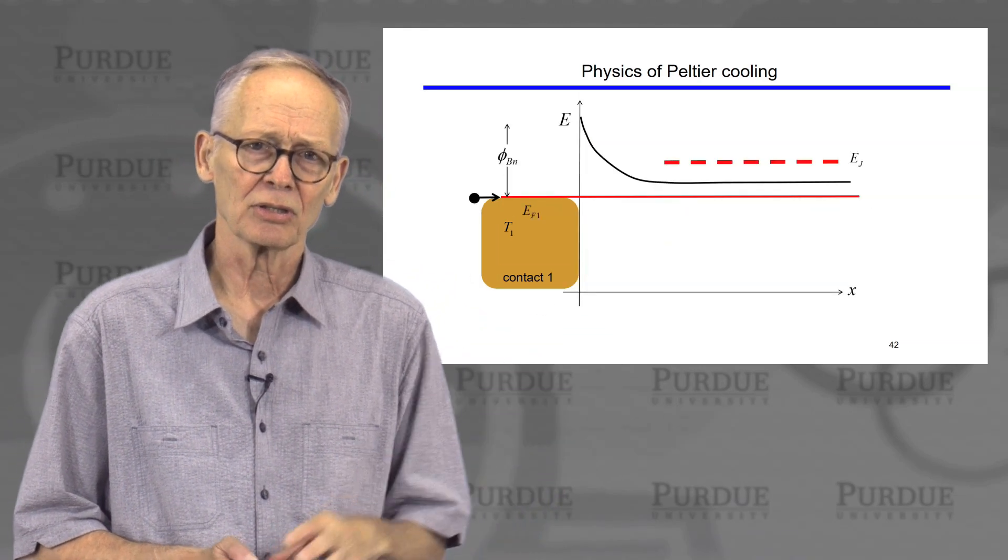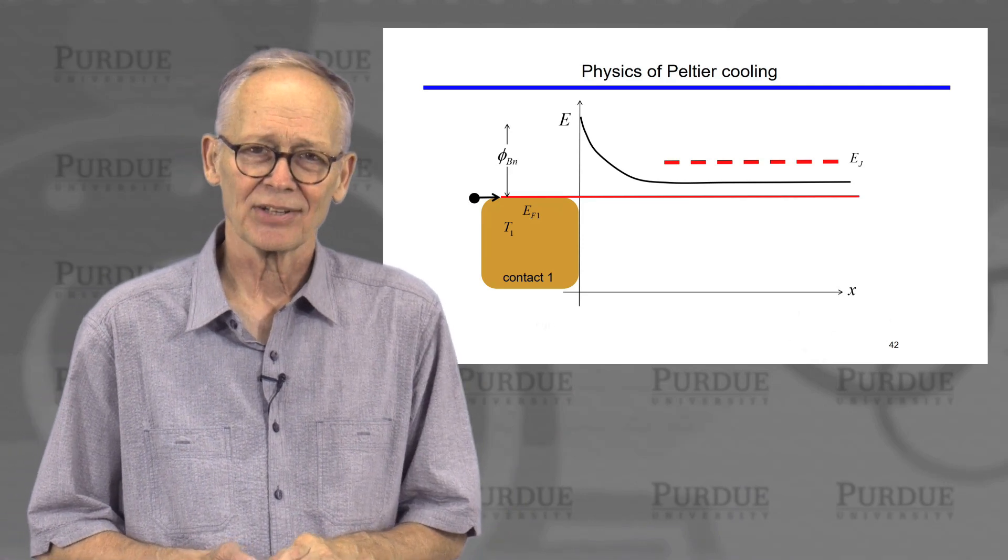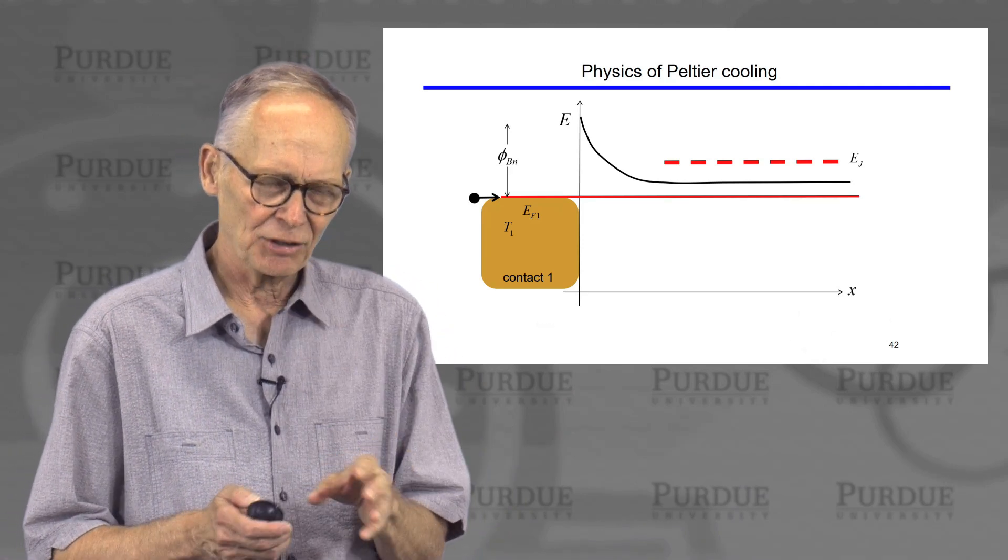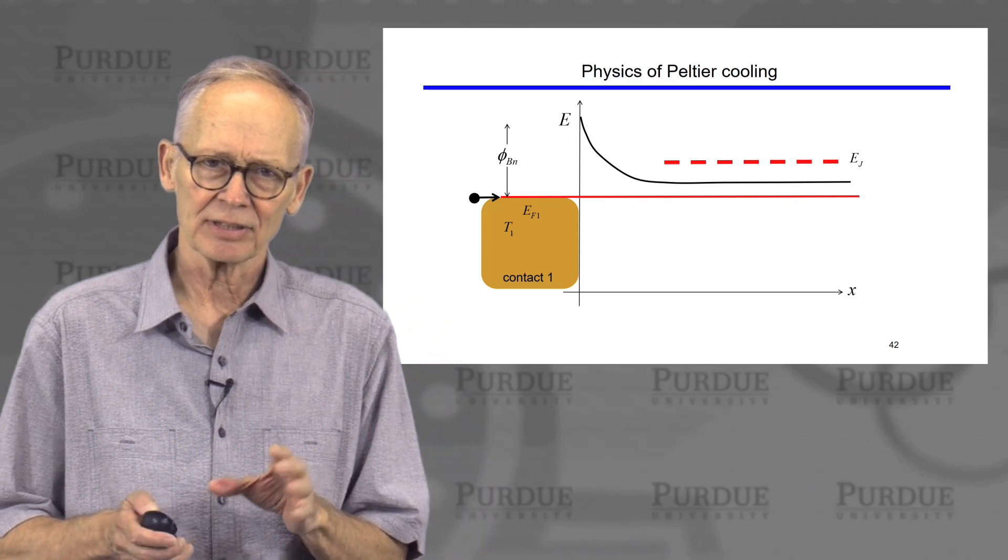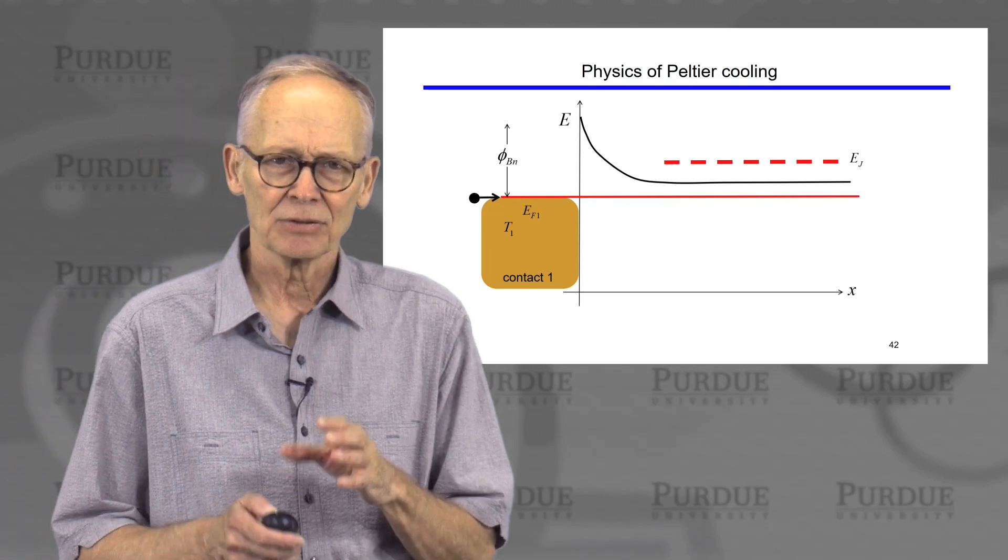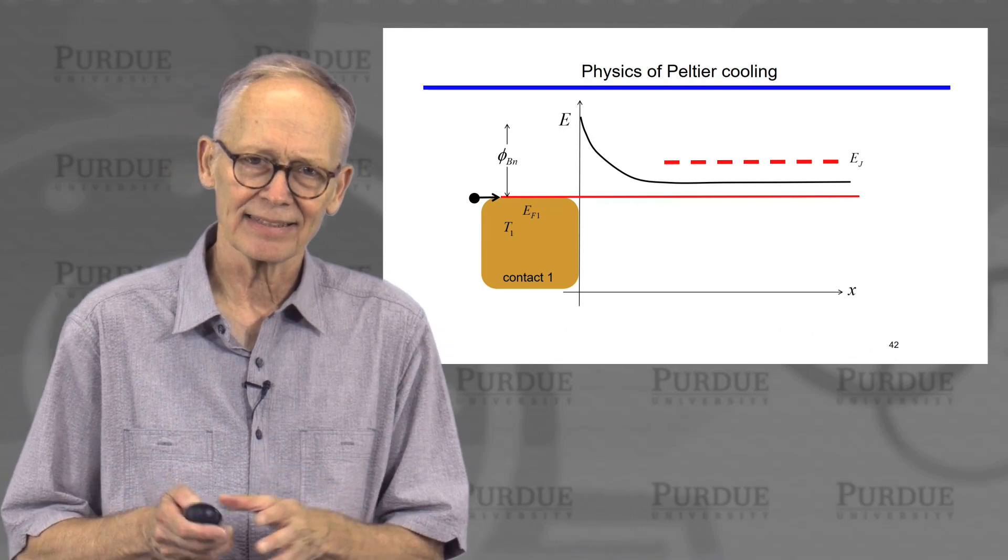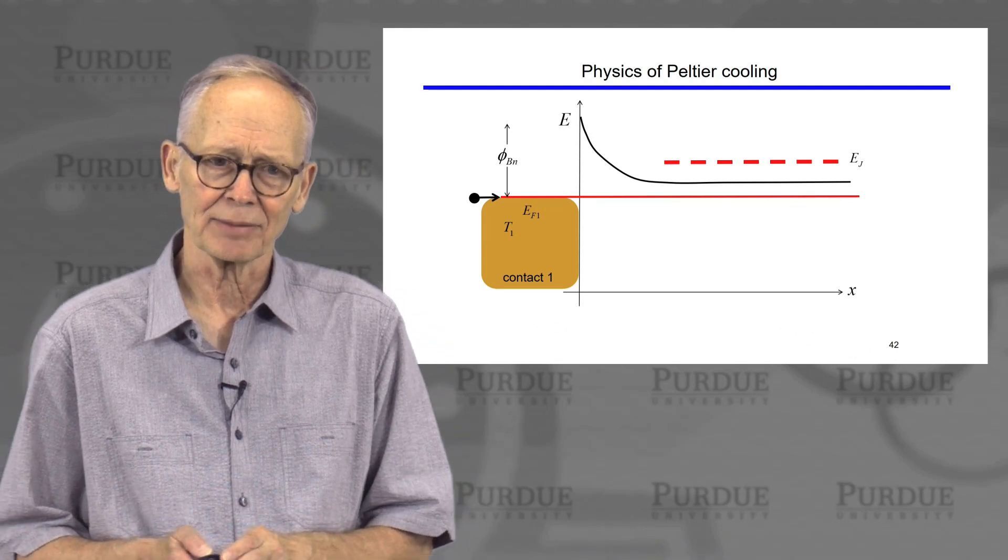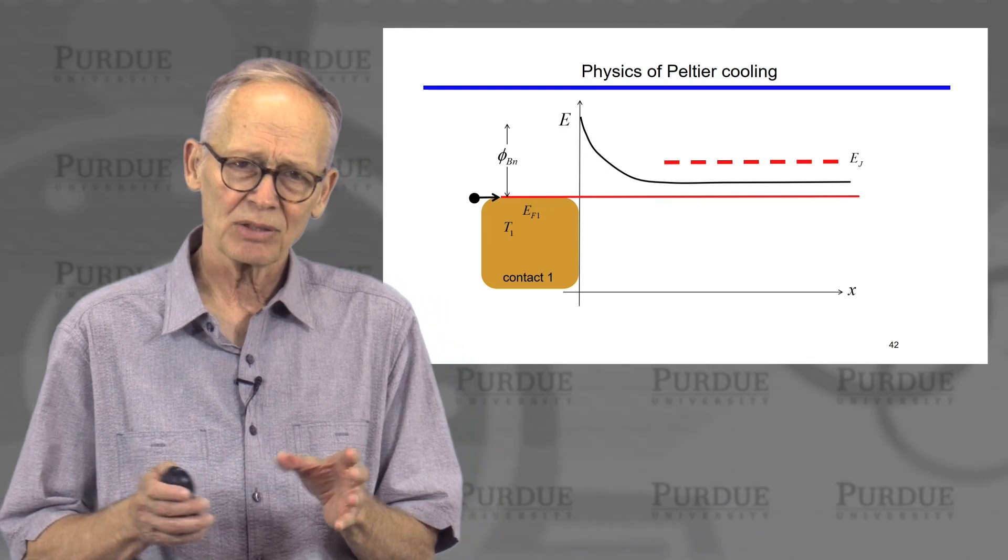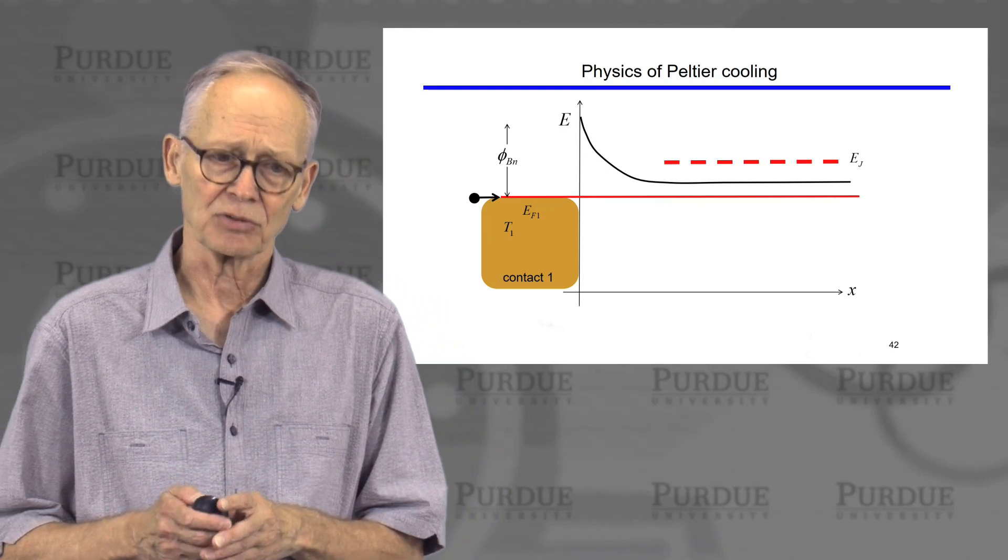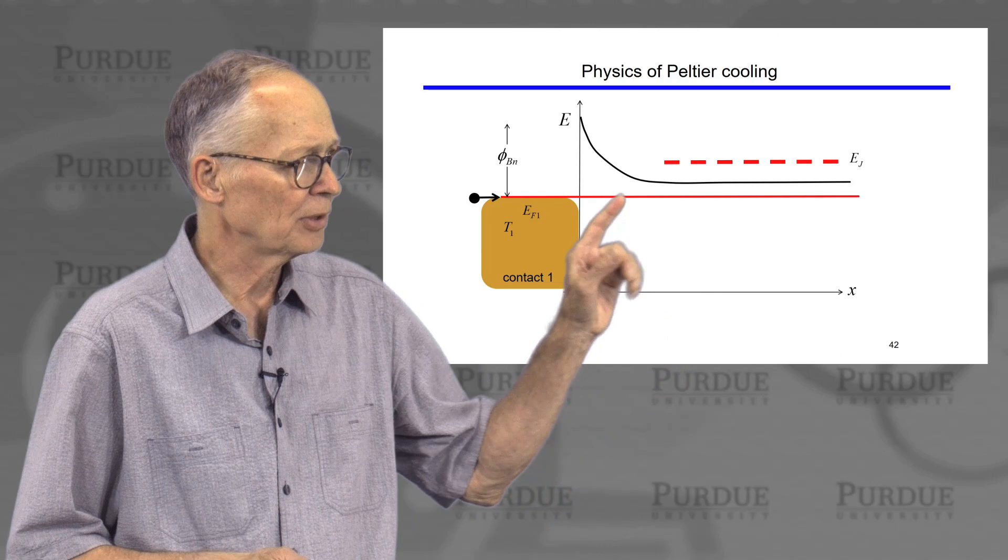Now let's look a little more closely. We know that contacts aren't ideal. There's band bending and Schottky barriers and things at contacts. Doesn't the Peltier coefficient then depend on the details of the contact and not just on the properties of the semiconductor? Well, no, not if the semiconductor is long. So what happens is something like this.